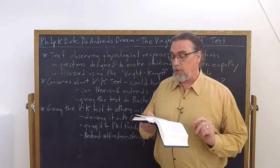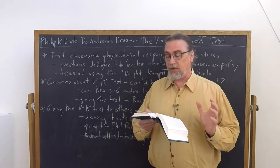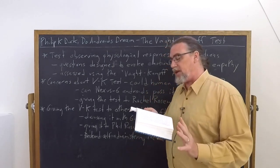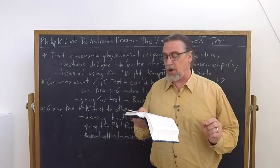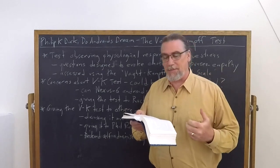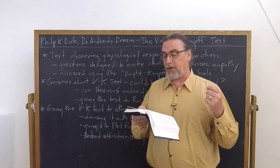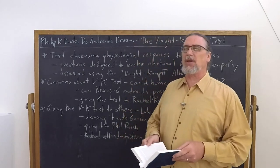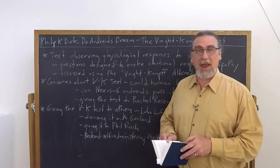But new scales of achievement, for example, the Voigt-Kampf empathy test had emerged as a criteria by which to judge. An android, no matter how gifted as to pure intellectual capacity, could make no sense out of the fusion, which took place routinely among the followers of Mercerism, an experience which he, Deckard, and virtually everyone else, including subnormal chicken heads, managed with no difficulty. Now, it's not actually measuring the fusion as such, although androids don't understand Mercerism.